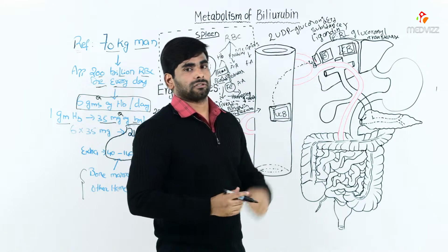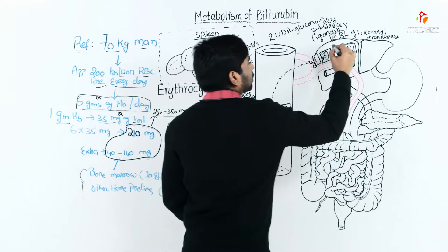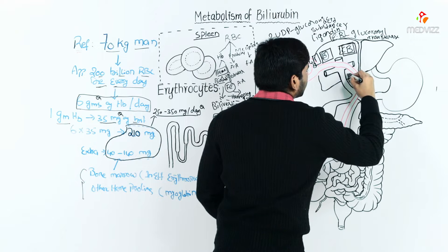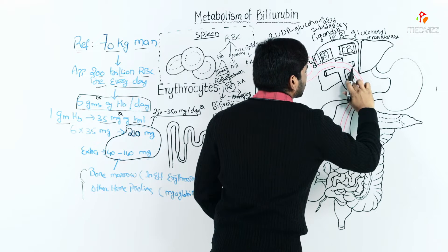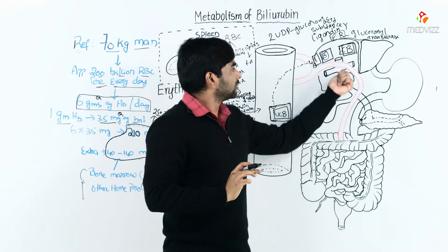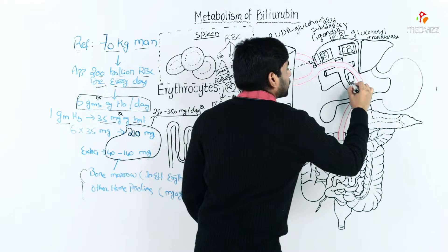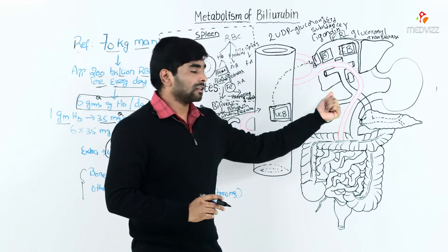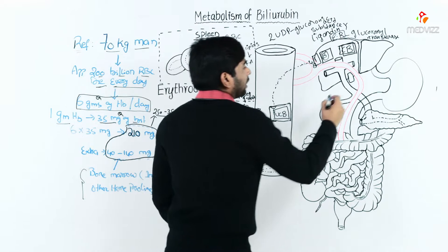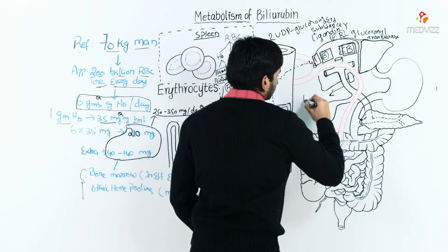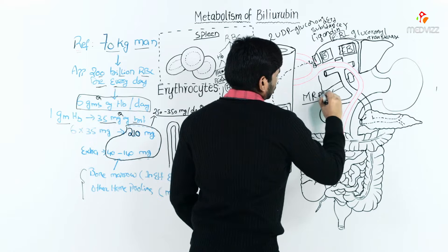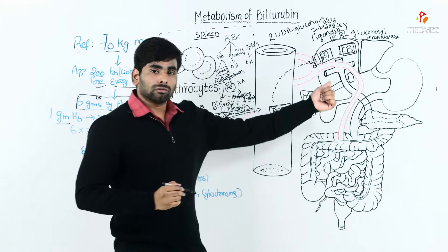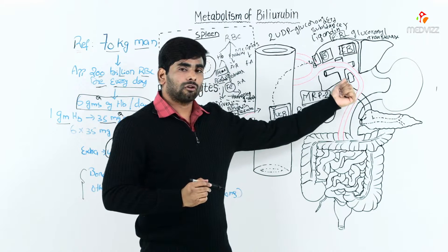The conjugated bilirubin must then be transported into the biliary system. On the canalicular side, special transporters handle this transportation. This is the rate-limiting step and involves active transport requiring energy. The protein responsible for this transportation is MRP2. Through this transport, conjugated bilirubin enters the biliary system.